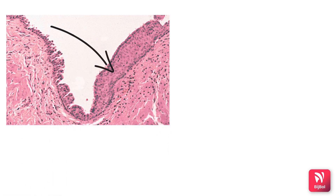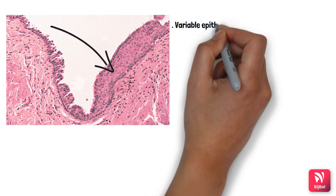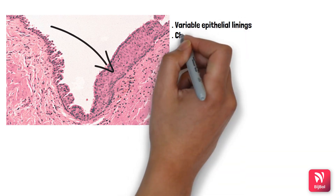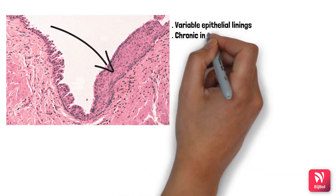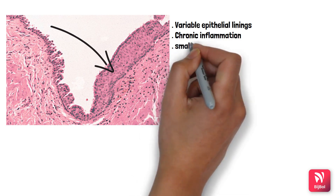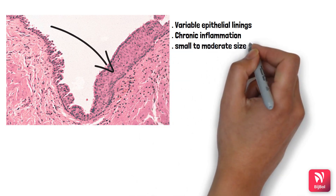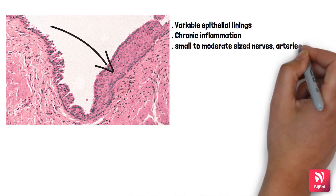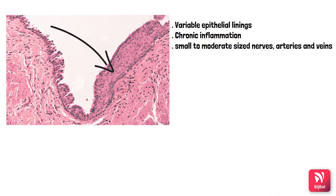Histopathologically, nasopalatine duct cyst shows a highly variable epithelial lining. This variable lining depends upon the localization of the cyst — it can be stratified squamous, pseudostratified columnar, or simple columnar. The connective tissue shows chronic inflammation, and sometimes the capsule shows small to moderate-sized nerves, arteries, and veins, because of the presence of the incisive canal and incisive nerves.